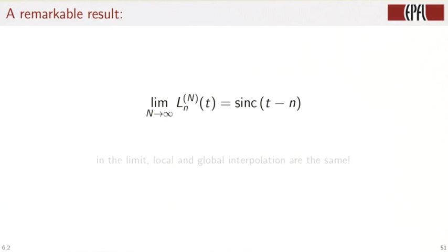as n goes to infinity, then this tends to sinc of t minus n. So in the limit, local and global are the same interpolation schemes.